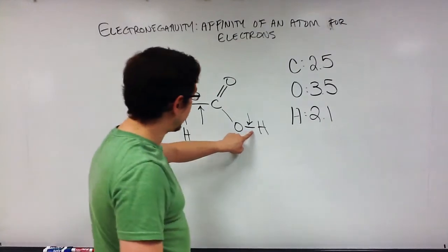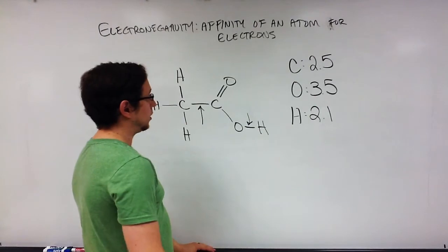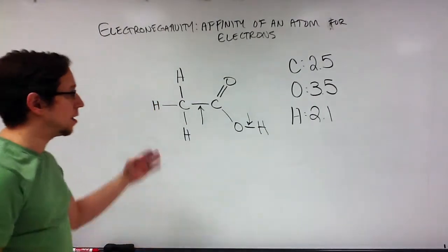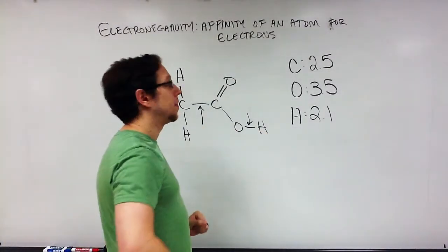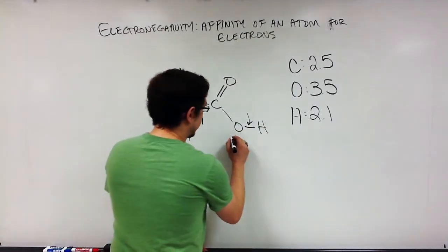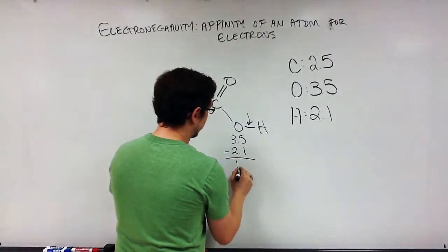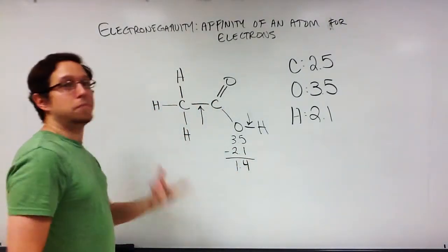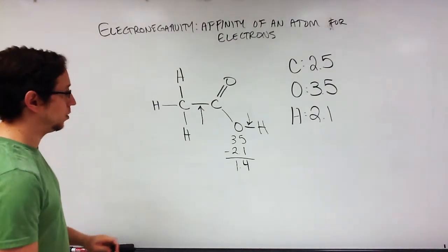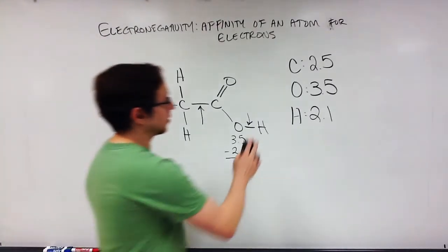If I wanted to determine what kind of bond exists between oxygen and hydrogen, all I need to do is subtract the electronegativity of one atom from the other. I always take the lower electronegativity and subtract it from the higher. So here, I take 3.5 for oxygen and subtract 2.1 for hydrogen, giving 1.4. This number alone doesn't mean anything yet, but remember, I defined the ranges for each distinct type of bond in lecture.